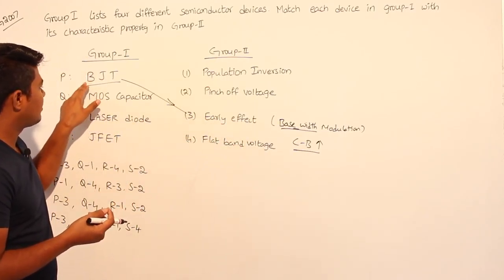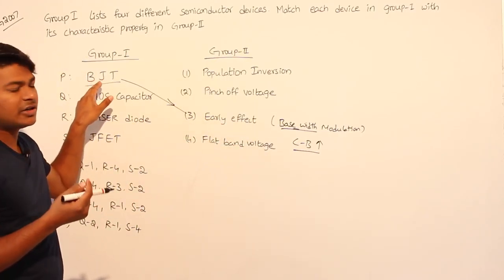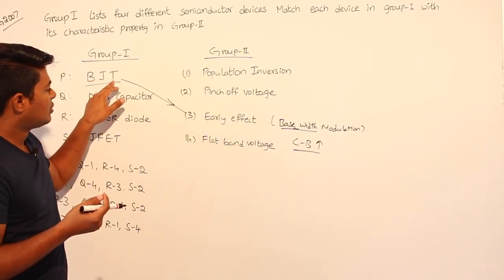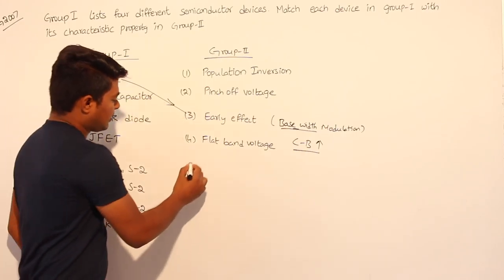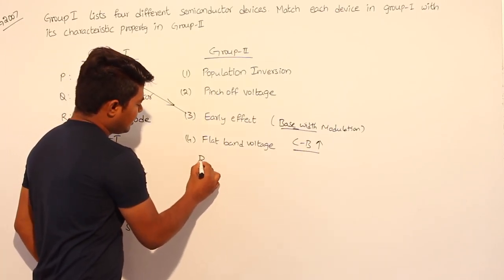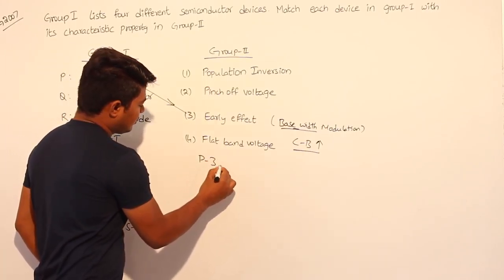Coming to the semiconductors, base is related to BJT. So for P, the answer is 3.